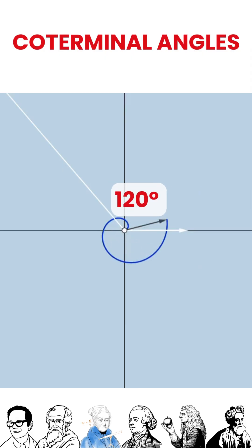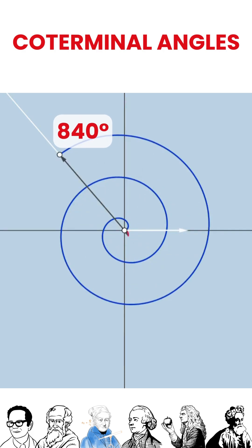Coterminal angles are angles that share the same initial and terminal sides, but they differ by full rotations of 360 degrees.